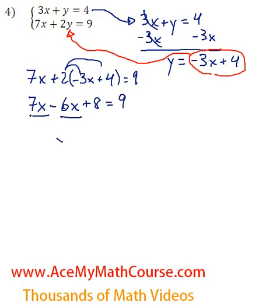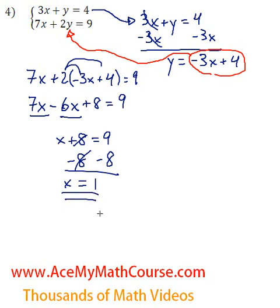Excellent, so 7x minus 6x is just x plus 8 equals 9. Then I can just subtract 8 from both sides of the equation. And voila! 9 minus 8 is 1. So x is 1.